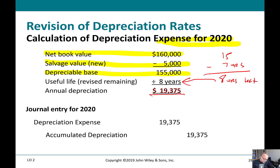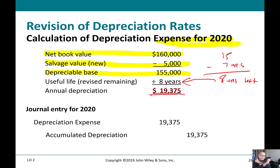We use the new estimate for the current year that the change was made and all future periods. Some exam questions try to trick you by saying the entity decided in November of 2020 — you might think you use the old estimate for the first 10 months and new estimate for 11 and 12. No — you use the new estimate for the entire year in which the change was made, regardless of when during the year it was decided.